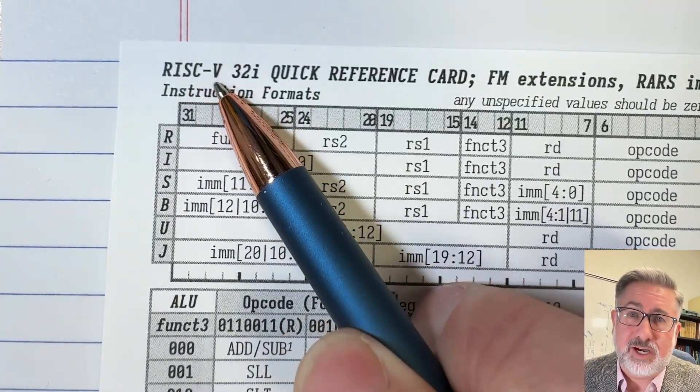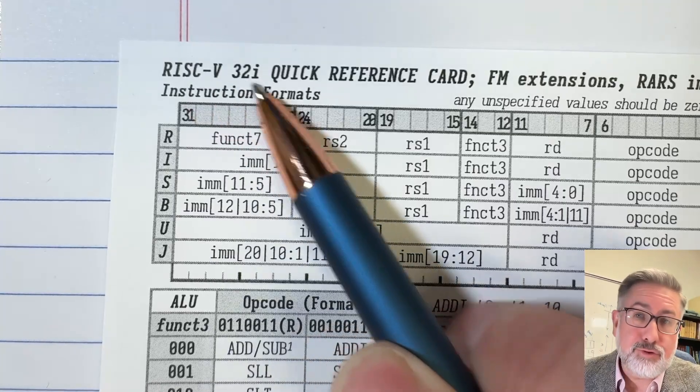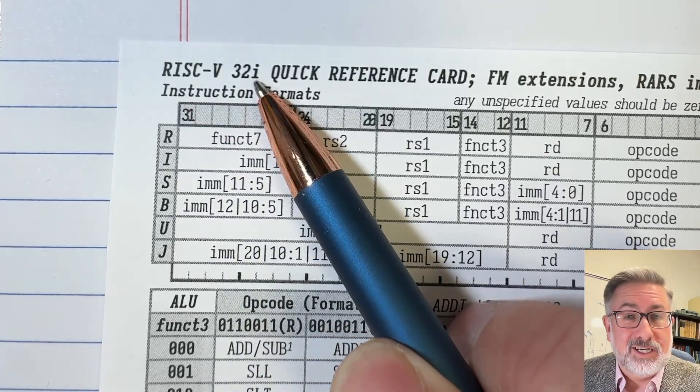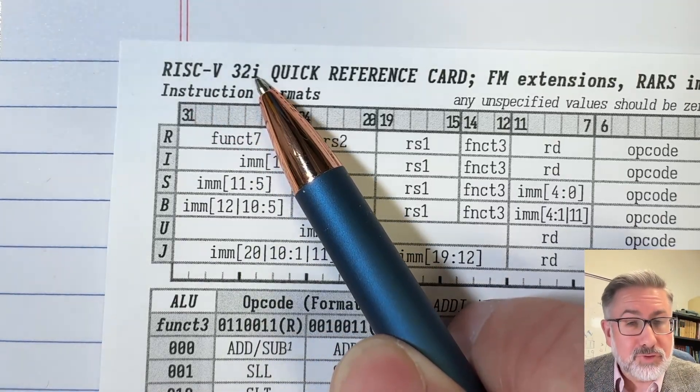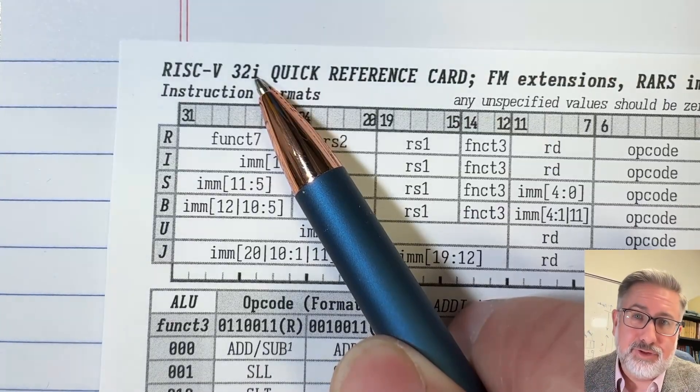We don't say RISC-V, we say RISC-V. RISC-V 32i, this is the integer version, the base version of RISC-V at 32 bits.